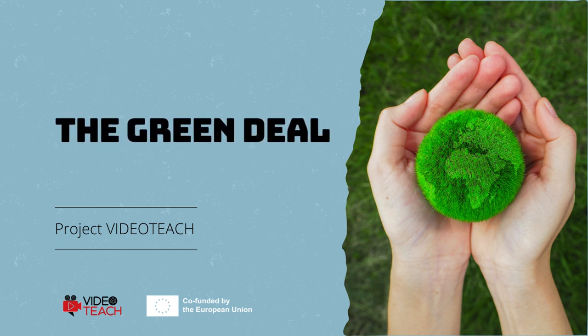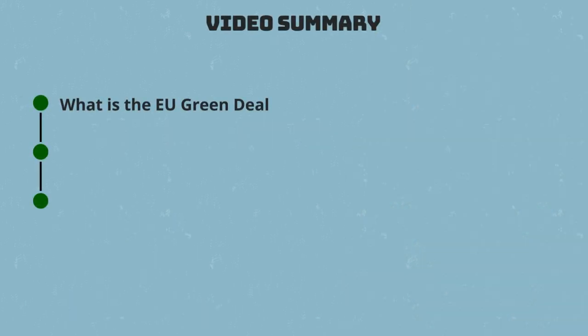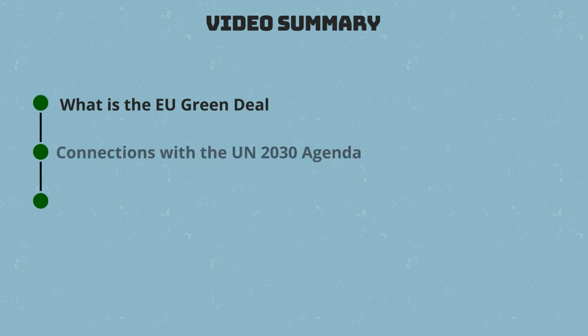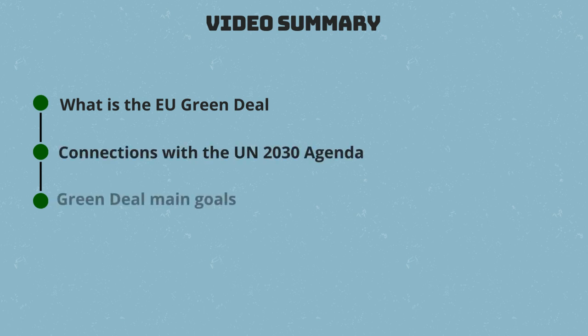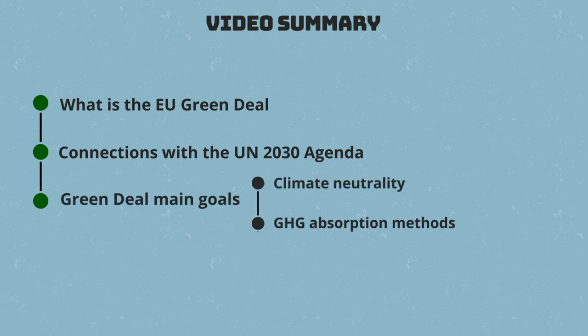The Green Deal. In this video, you will learn what is the EU Green Deal, how it's connected to the UN Agenda 2030, what are its main goals, and in particular, what climate neutrality means and examples of measures for the absorption of greenhouse gases.